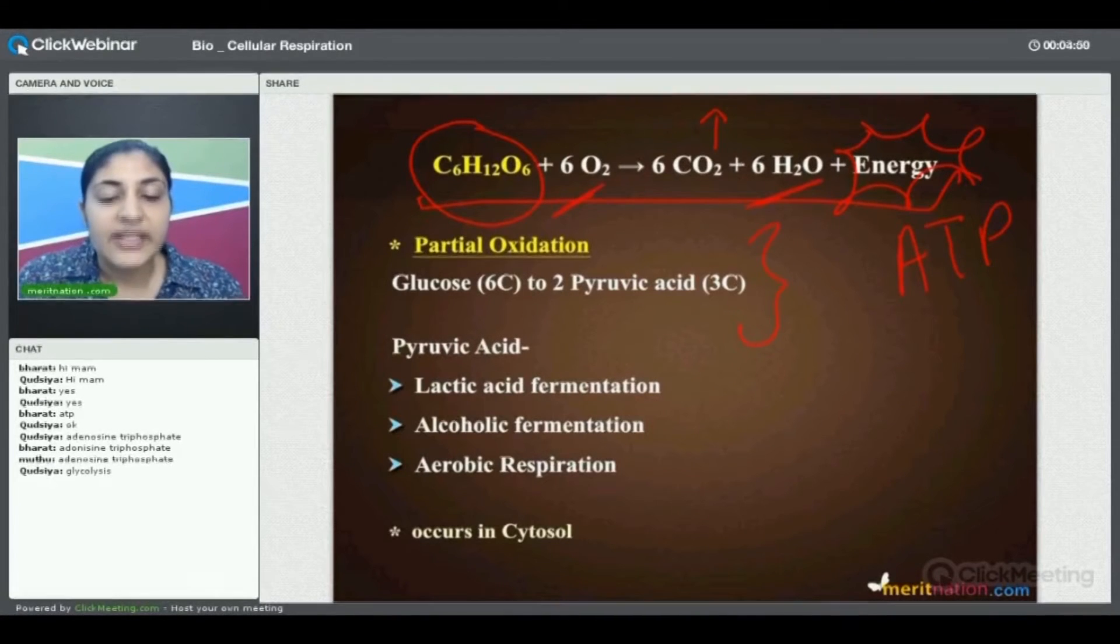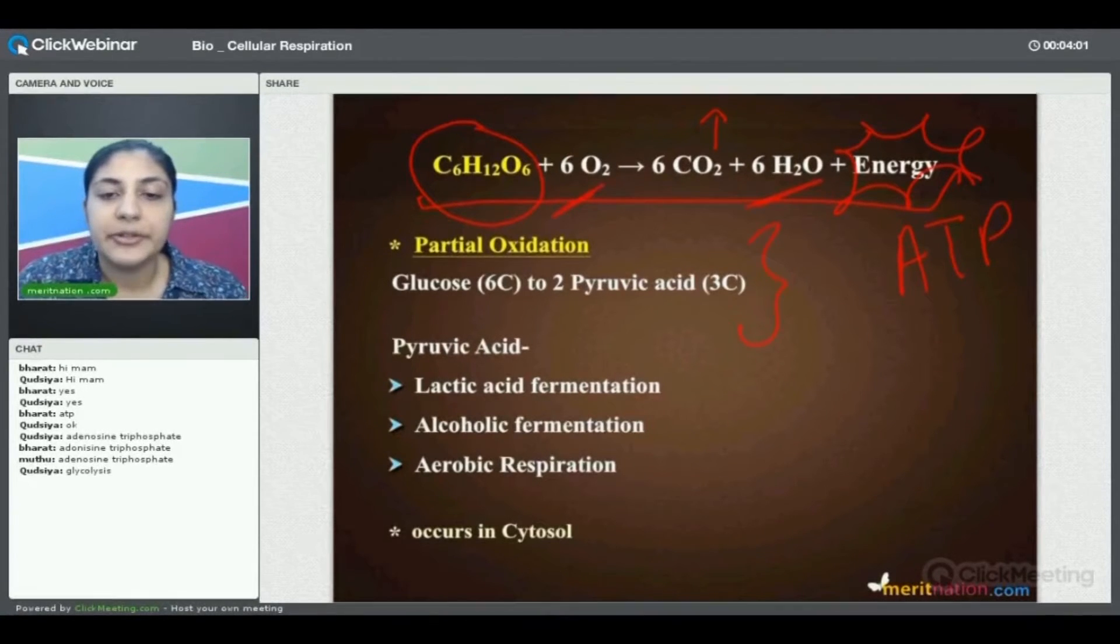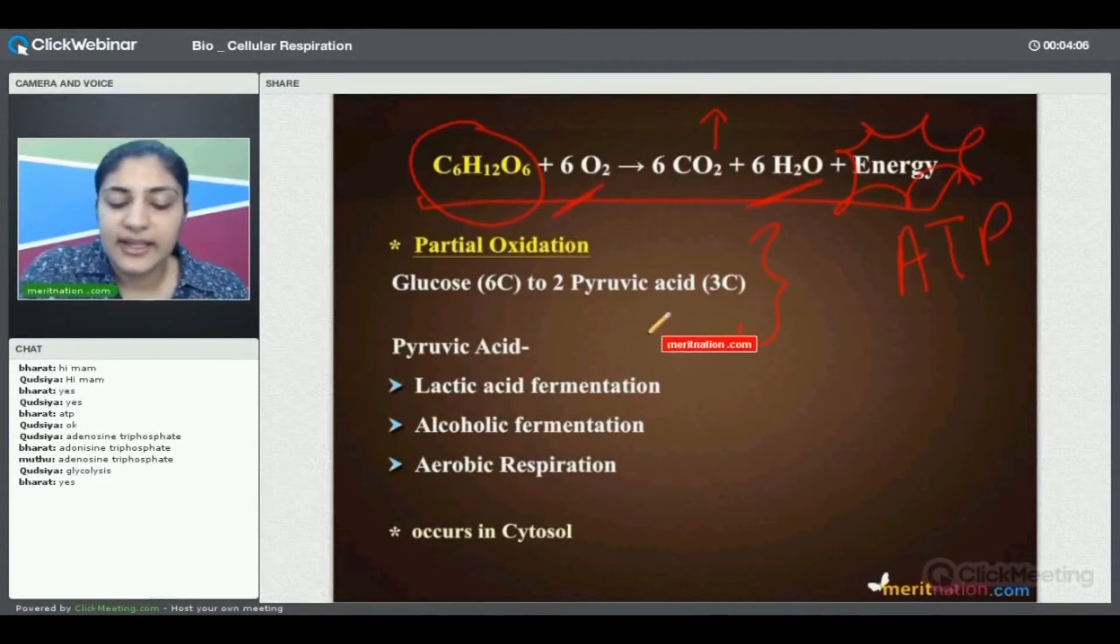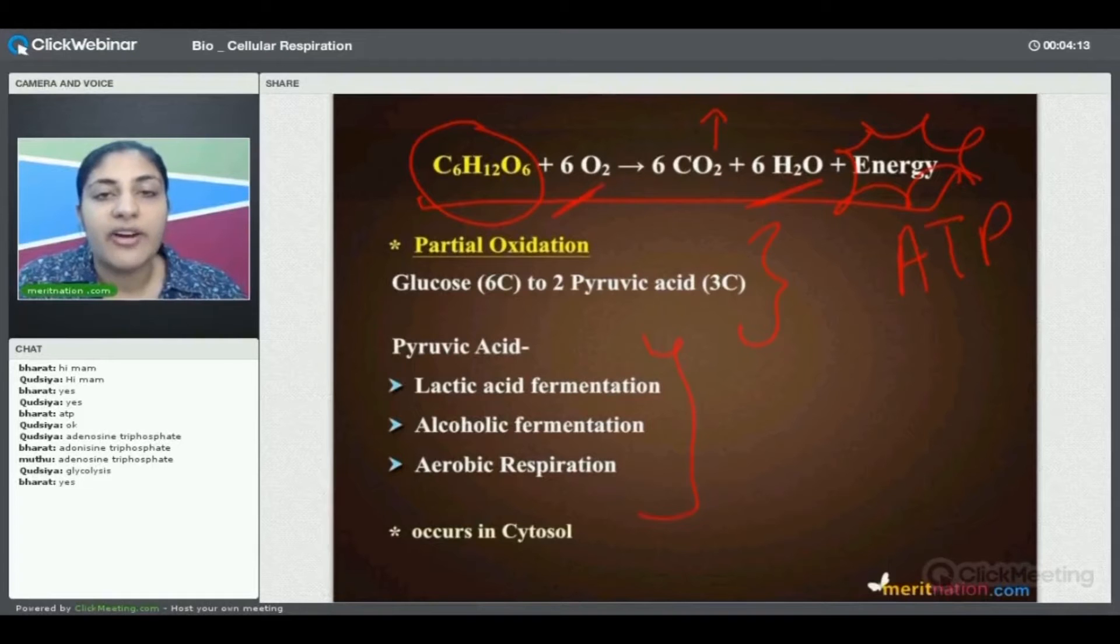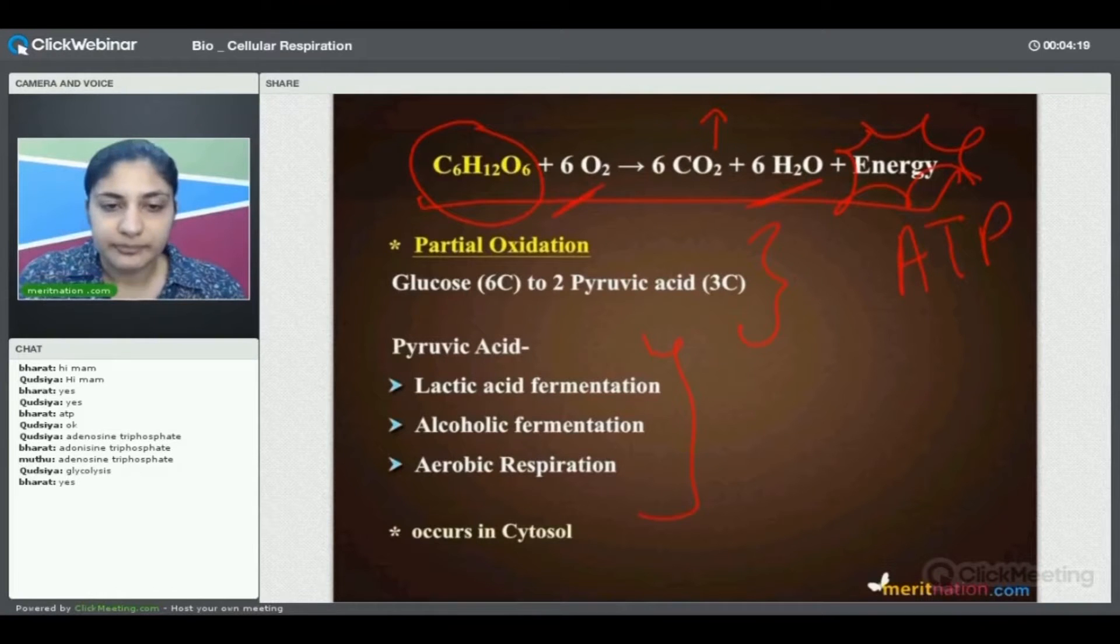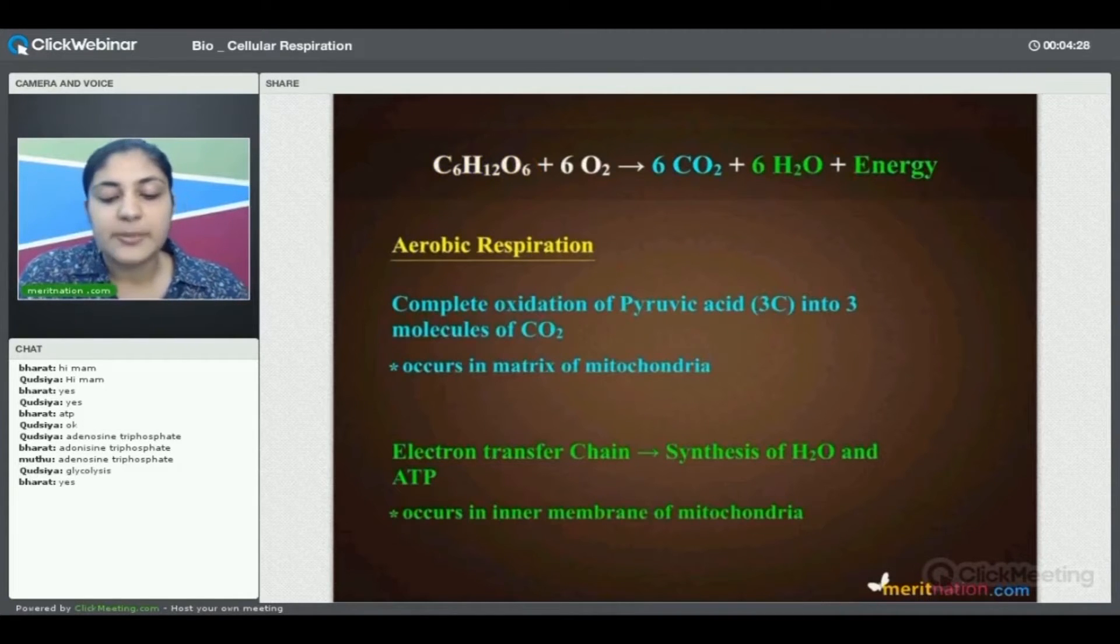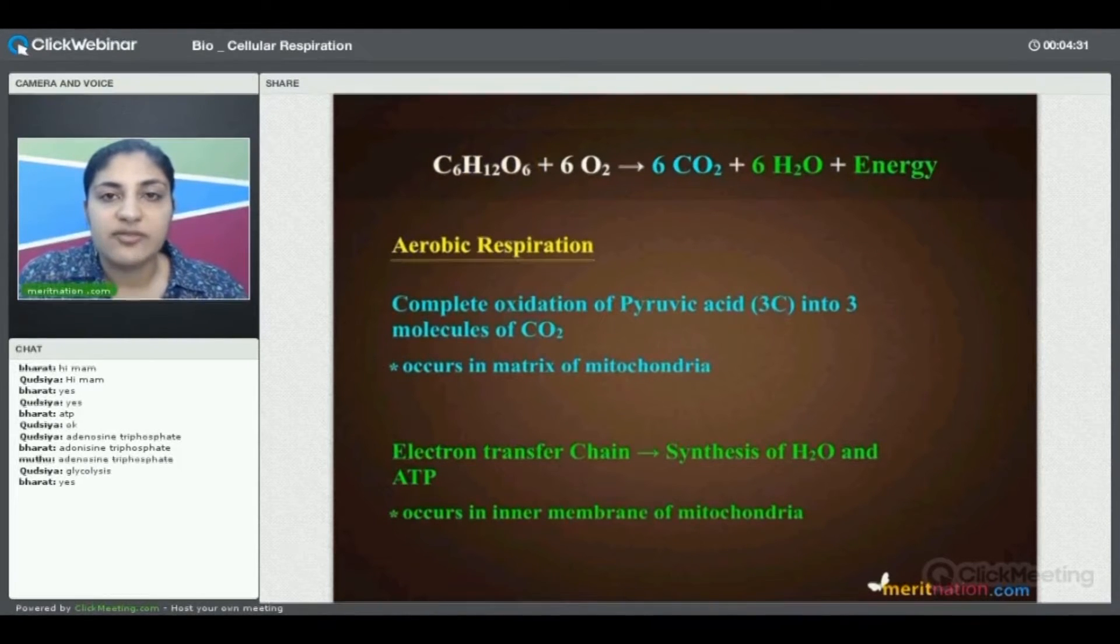In glycolysis, the end products are two pyruvic acids. The fate of these pyruvic acids can be lactic acid fermentation, alcoholic fermentation, or aerobic respiration, depending upon the organism. This step, glycolysis, happens in the cytosol, that is to say the cytoplasm. The next step in aerobic respiration is that these pyruvic acids are completely converted into carbon dioxide.